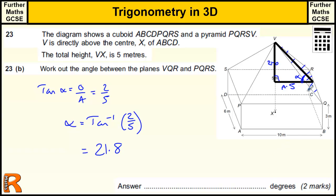There is actually one mark if you can clearly mark that angle onto the diagram, though it's very difficult. A lot of this is about how good your visualisation is with planes and intersections of planes. If you can spot the correct angle, it's fairly straightforward to calculate — but if you can't identify it, it's quite difficult.